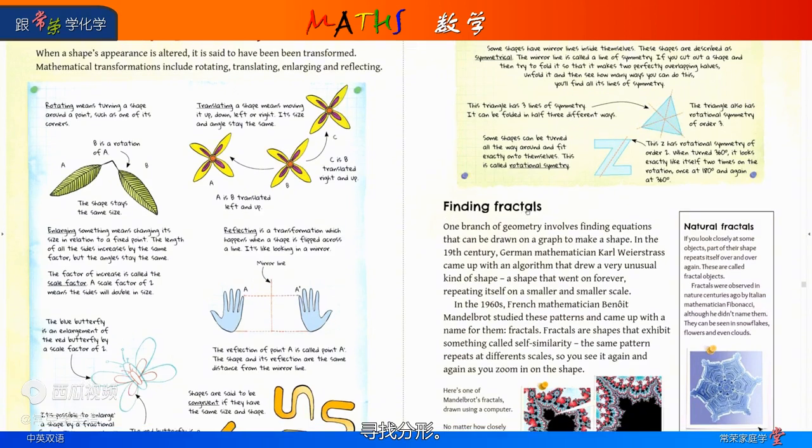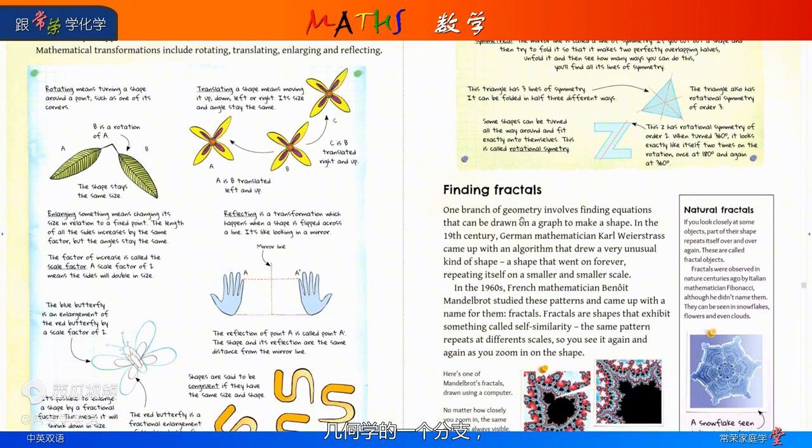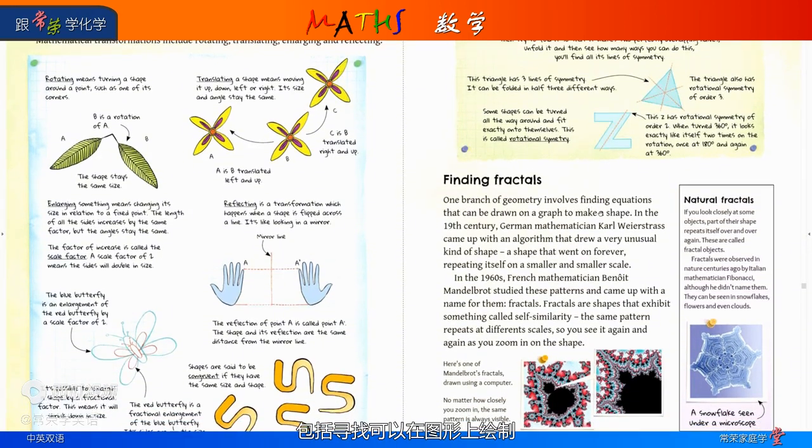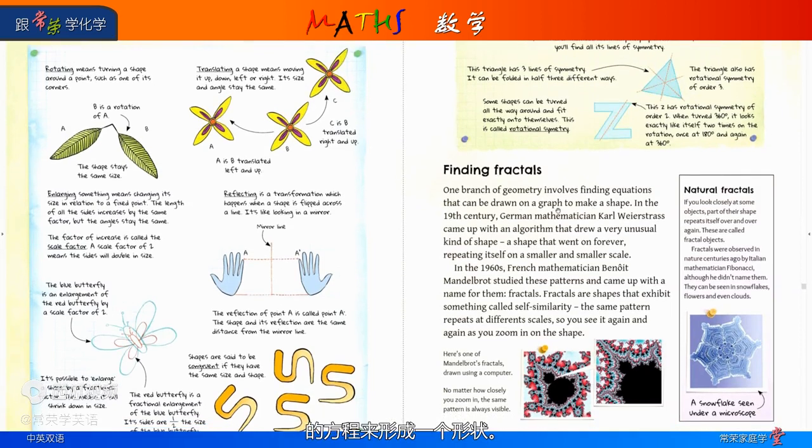Finding fractals. One branch of geometry involves finding equations that can be drawn on a graph to make a shape. In the 19th century, German mathematician Carl Weierstrass came up with an algorithm that drew a very unusual kind of shape. A shape that went on forever, repeating itself on a smaller and smaller scale.